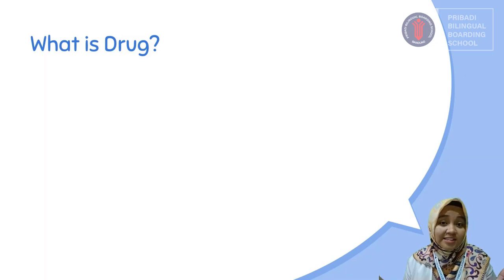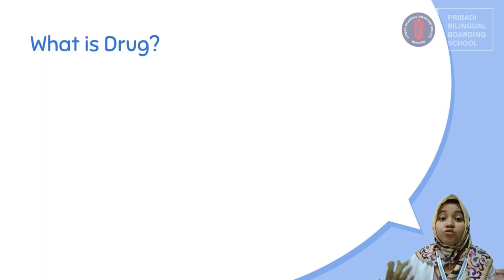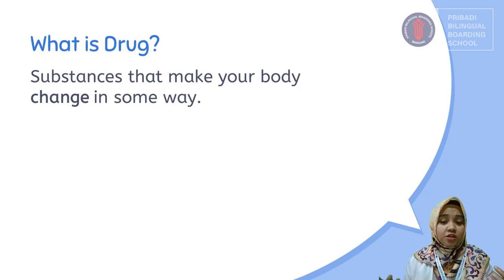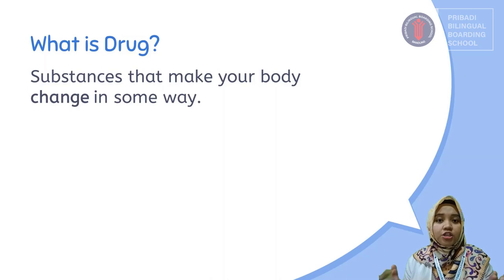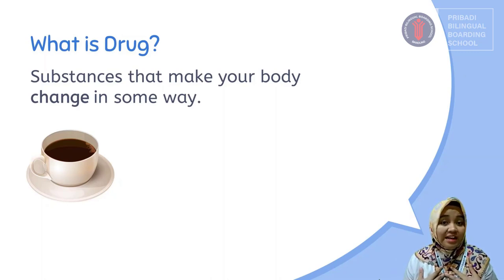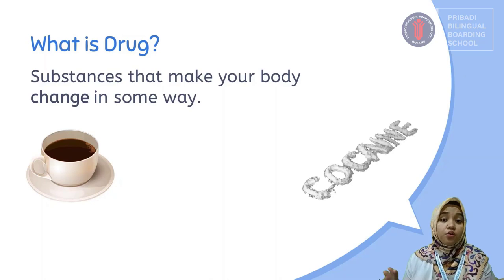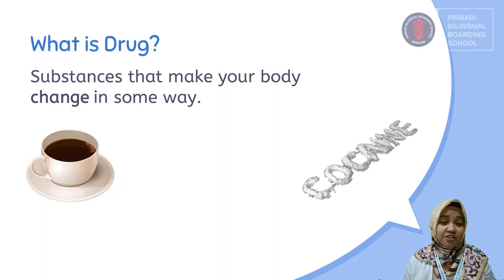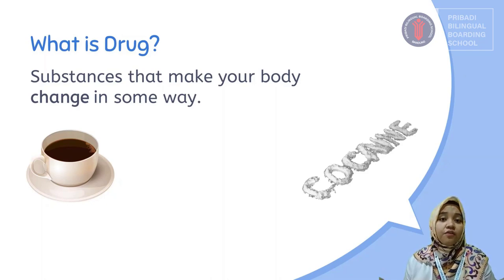Do you know what a drug is? Drugs are defined as substances or chemicals that can make your body change in some way. There are many types of drugs. For example, the caffeine inside your coffee can make your heart rate faster. There is also cocaine, which is an addictive drug that can be harmful or have negative effects on your health.